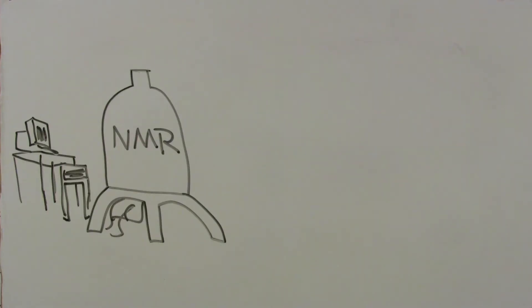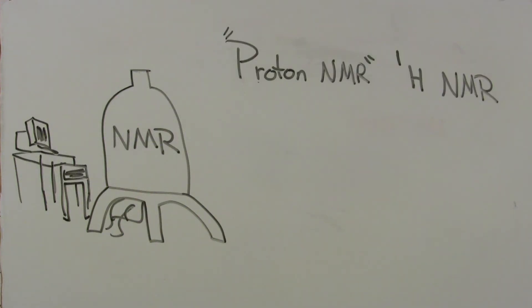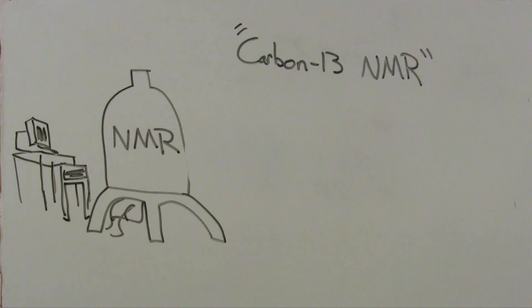NMR spectroscopy helps identify a compound by displaying information about the bonds within the compound. Running a proton NMR means that you will have a machine interact with the hydrogen atoms in your compound to identify the bonds hydrogen atoms make. Similarly, a carbon-13 NMR helps identify bonds made by carbon.